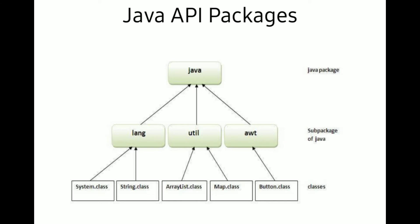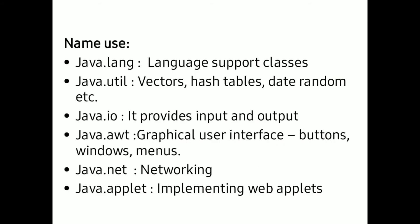The lang package contains some inbuilt classes, and the util package also contains some built-in classes for Java programming. The awt package has classes related to development of graphical user interfaces. Some of the built-in packages used frequently in Java are: java.lang, java.util, java.io, java.awt, java.net, and java.applet. Every package is present inside the main Java package.